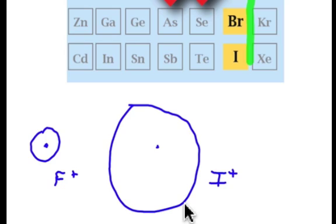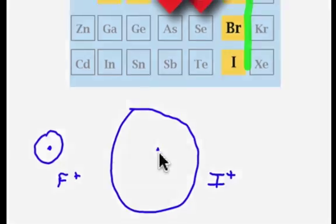But in the case of the iodonium cation, that electron cloud is held much further away from the positively charged core, and so those electrons are ineffective at stabilizing the surplus of positive charge.